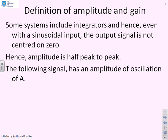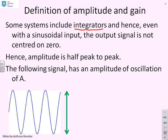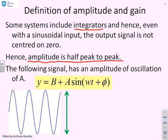We need to define amplitude carefully. Some systems include integrators, and even with a sinusoidal input the output signal might not be centred on zero. So the amplitude is defined as half peak-to-peak, marked by the double green arrow. For example, if y = b + A·sin(ωt + φ), then b is the offset and 2A is the peak-to-peak value. When talking about the amplitude of oscillation you need that A term — don't be confused by the fact there might be a b offset in there.